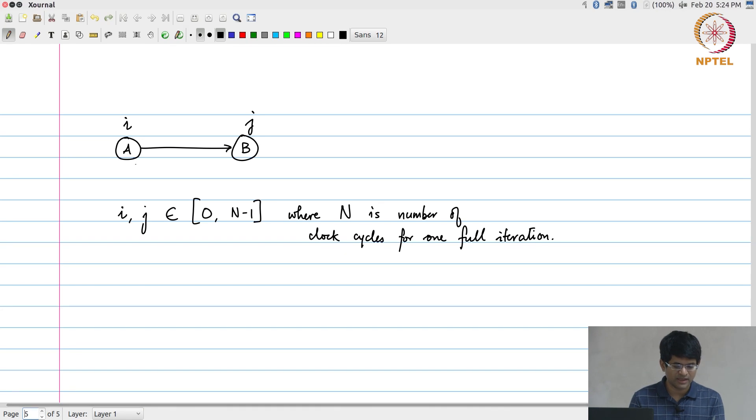If I have an edge in a data flow graph that looks like this - there is one module a whose output is feeding into b. a is going to execute at time i and b is going to execute at time j. Let's say that there are some number of delay elements, some w delay elements on this edge between a to b. Initially let's assume w is equal to 0. If w equals 0, what can I say about i and j? In particular, if a was an adder, j must be greater than or equal to i plus 1.